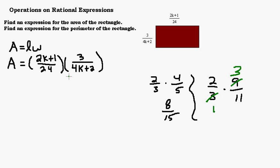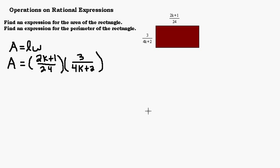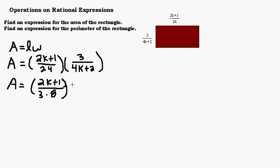Before I can cancel, I have to think about what the factors of these numbers are. Looking at 3 and 24, I can see I'm going to be able to cancel because 24 is 3 times 8. For the other set of binomials, 2k plus 1 and 4k plus 2, I may have to think about that a little bit more. The first one, 2k plus 1, doesn't factor — it doesn't have any common factors. The 24 I'm going to write as 3 times 8 so I can cancel it with the 3.